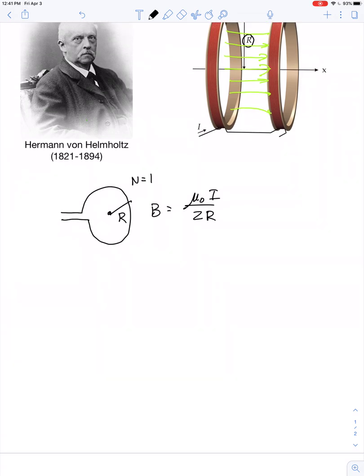Then in the previous lesson, we found if we take a loop of wire, turn it on its side, and present an x-axis, and project the point at the center at some distance down the x-axis. Then the magnetic field at this point p is equal to mu-knot-i times r-squared, divided by 2 times the quantity x-squared plus capital R-squared to the 3 halves.